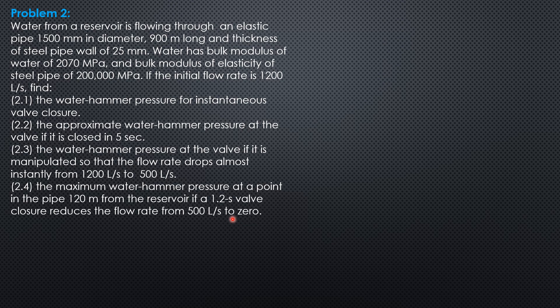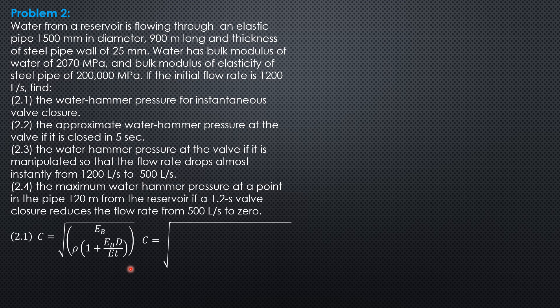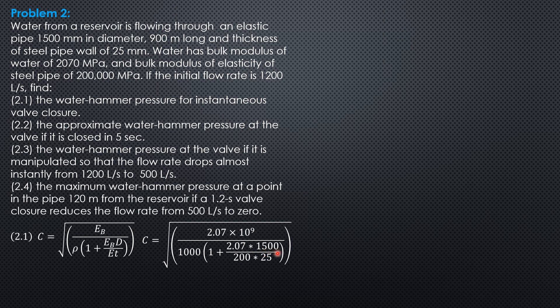First, compute the celerity, because for instantaneous valve closure, water hammer pressure is C times density times velocity divided by 1,000 to express it in kilopascals. C equals the square root of the bulk modulus of the fluid over density, times the quantity 1 plus bulk modulus of water times diameter over bulk modulus of pipe wall times wall thickness. Substituting: square root of 2.07 × 10⁹ Pa over 1,000 times (1 + 2.07 GPa × 1,500 mm / (200 GPa × 25 mm)). Celerity C = 1,030 meters per second.